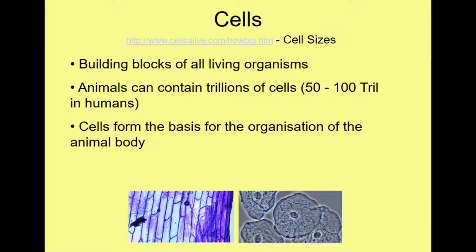Cells form the basis for the organization of the animal body — and not just the animal body, but whether you're a plant or a fungi as well. We start off with individual cells, and cells of the same types come together to form tissues. Tissues come together to form organs, and then organs work together to form organ systems. But right at the bottom of that you have cells of a specific type — a particular structure that comes together to form tissues. So cells are right at the basis of the organization of an organism's body.